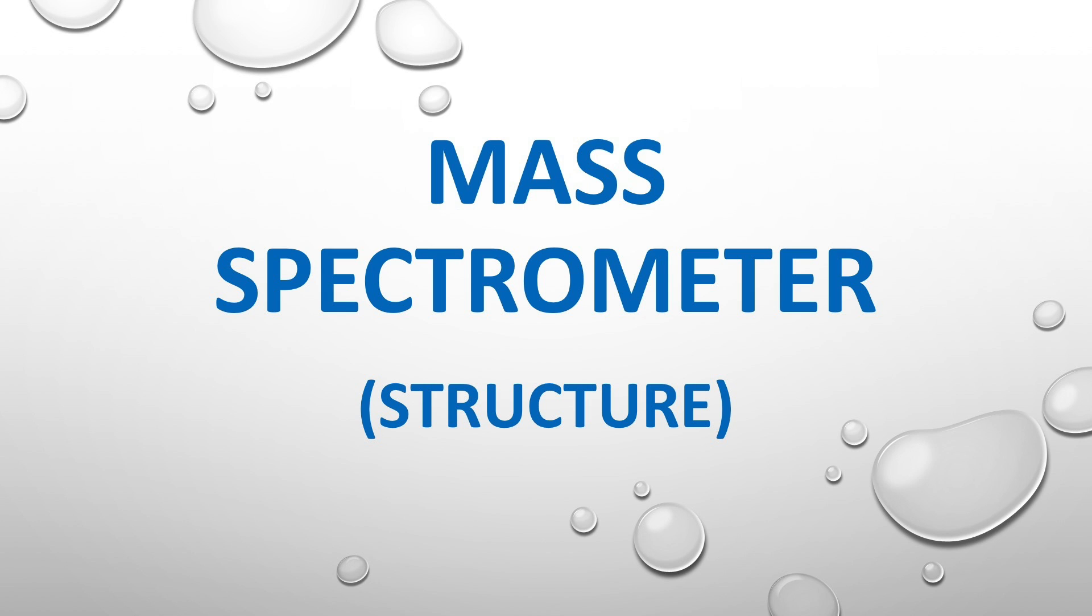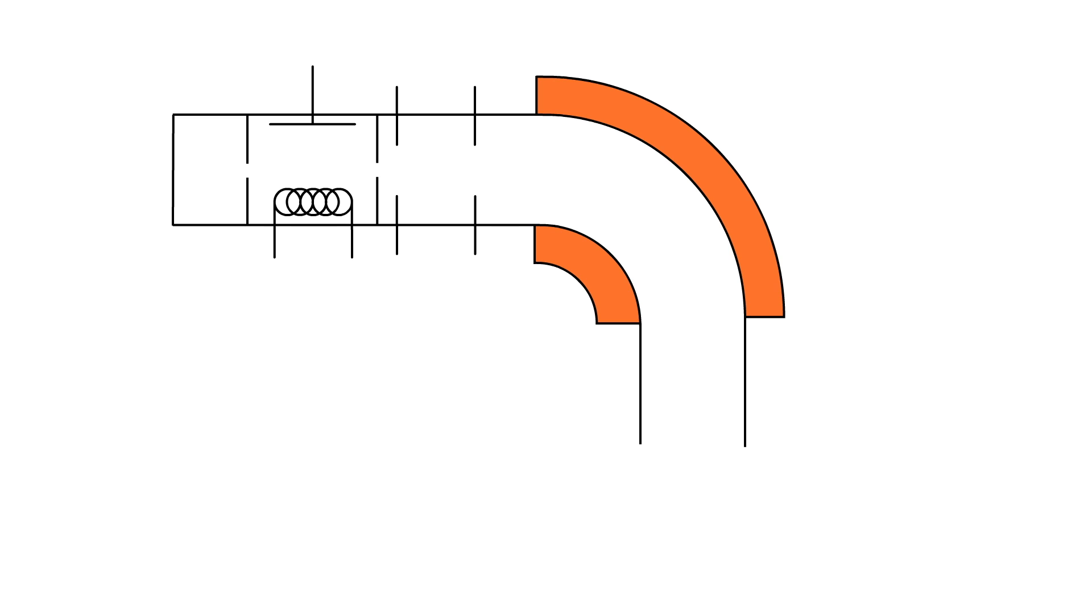In this section, we are going to introduce the structure of the mass spectrometer. The basic components of a mass spectrometer consist of first vaporization chamber. It is used to vaporize the sample.